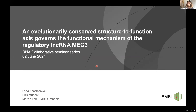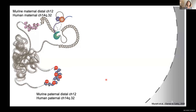Just to put everybody on the same level, a small introduction on MEG3: the name stands for Maternally Expressed Gene 3, and it is an imprinted gene. Repressive chromatin marks are deposited on the paternal allele of the MEG3 locus, which in humans is located on the long arm of chromosome 14, and in mice on the distal part of chromosome 12, which are syntenic chromosomes. Owing to this repressive chromatin on the paternal allele, transcription is only allowed from the maternal allele.